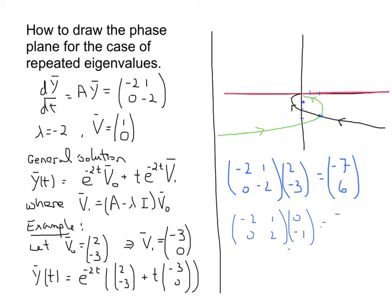Again, I get a -1 and a 2. And I see, should I be passing through this point here, I would be moving in the negative direction and up. My orientation would have to be this way.